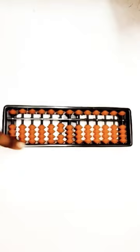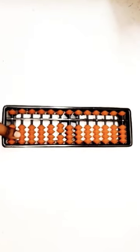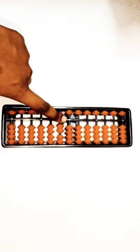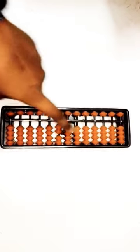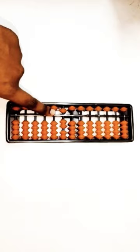So this is called the frame, this is called the upper beads, this is called the lower beads, this is called the unit point, this line is called the bar, and this line is called the rod.